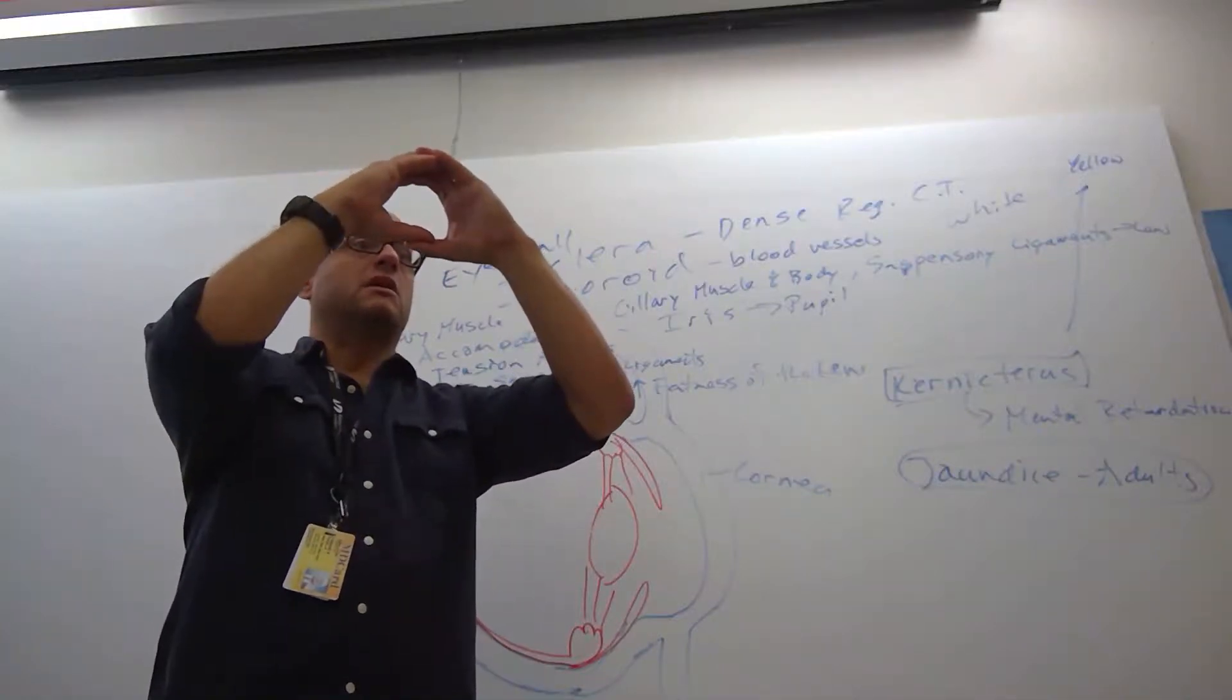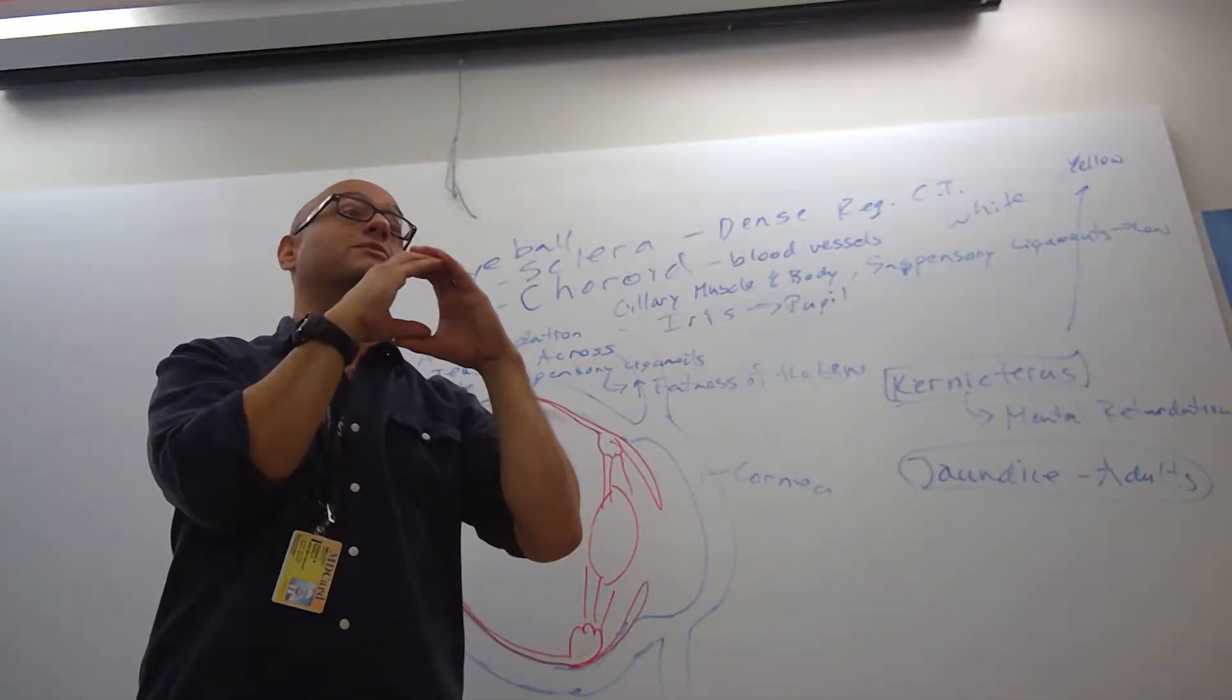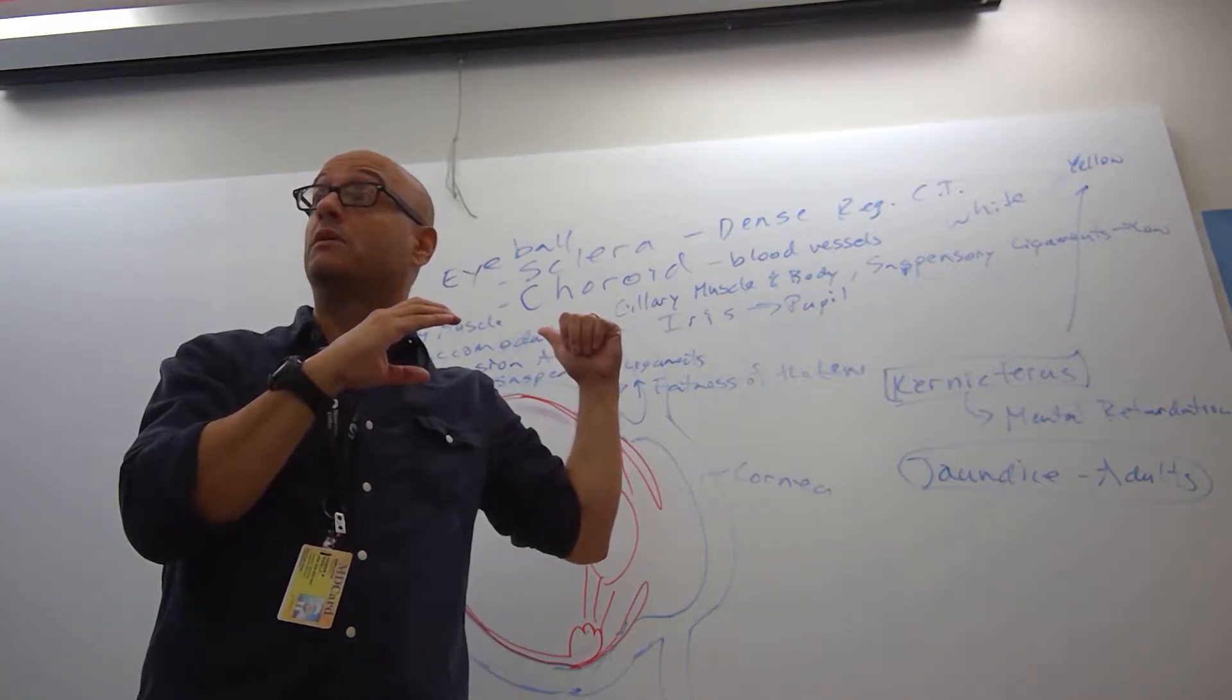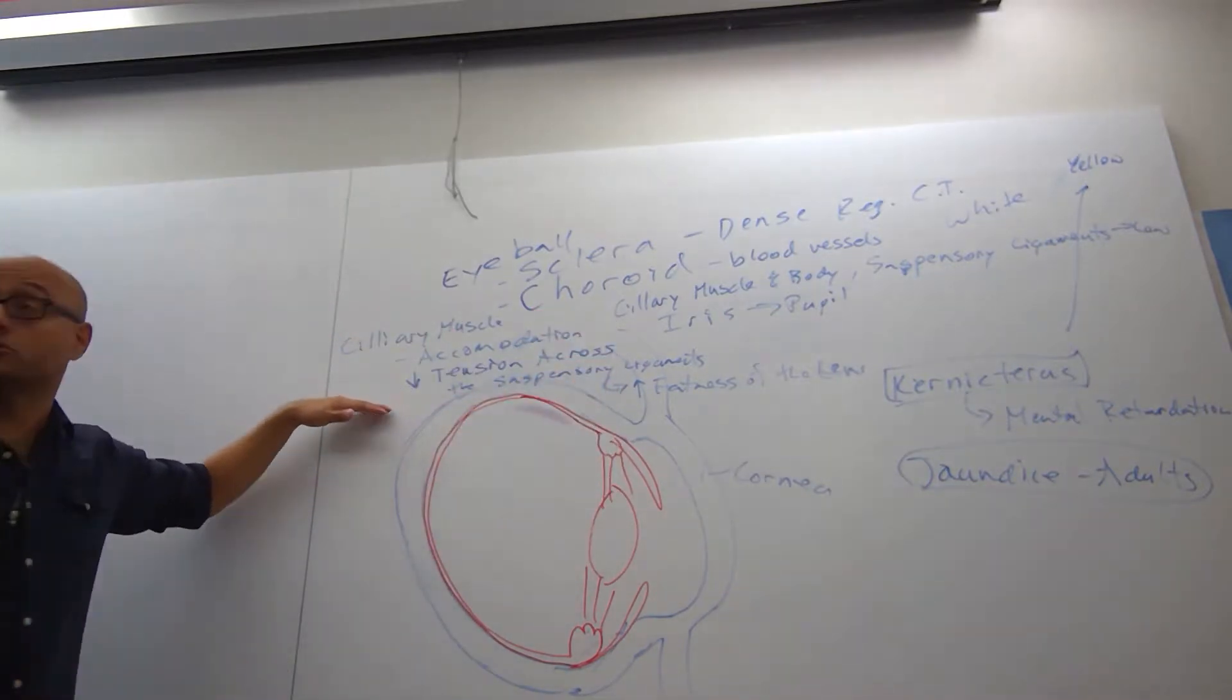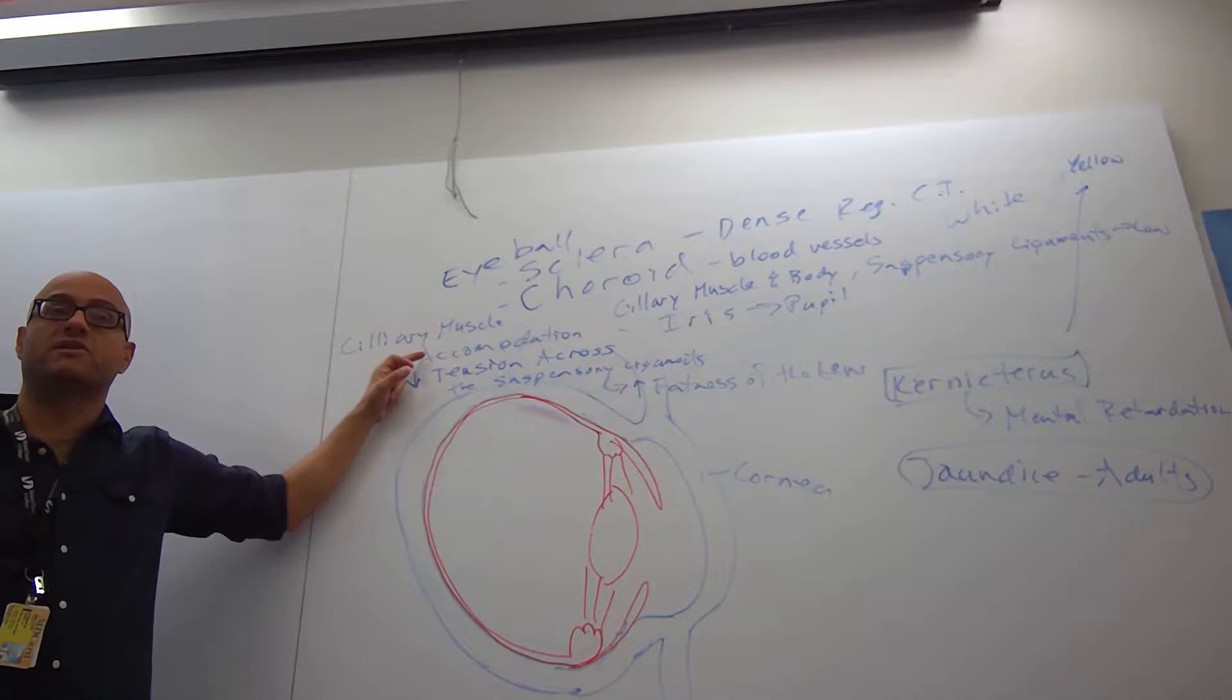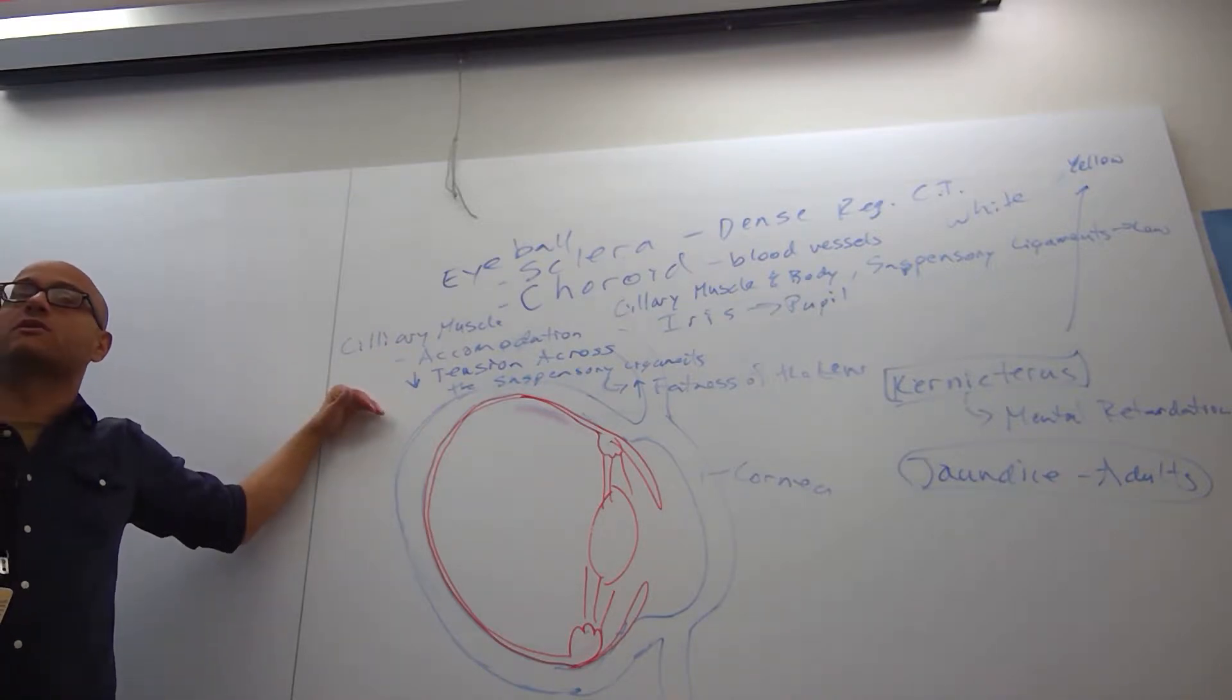They're arranged like this, and sure enough, it's a parasympathetic response. The accommodation response is a parasympathetic response. Ciliary muscles innervated by parasympathetic cranial nerve number three.